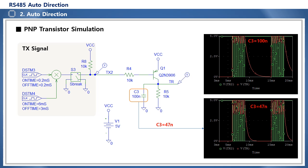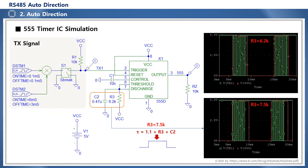Since there is a difference in ripple and discharge time in the logic high section depending on the capacity value of the integrating capacitor C3, it would be advisable to tune the specific time constant through actual measurement depending on the operating conditions. This is an auto-direction circuit using a 555 timer IC. After being triggered by the falling edge of the TX signal, the duration of logic high is determined by the time constant of resistor R3 and capacitor C2, given by the relationship 1.1 times R3 times C2. The duration of logic high increases as the R and C values increase, and decreases as they decrease.